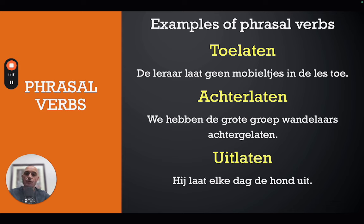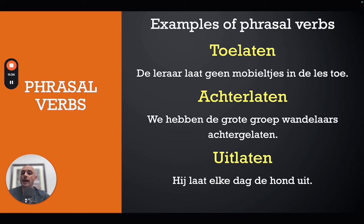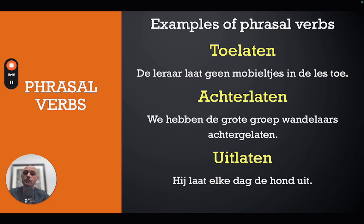'Uitlaten' means 'to let out.' For example, 'hij laat elke dag de hond uit' — 'every day he lets the dog out.' Again, 'laat' is the main verb at the beginning, and 'uit' — the second part of the separable verb — is placed at the end of the sentence.